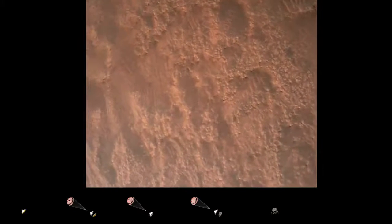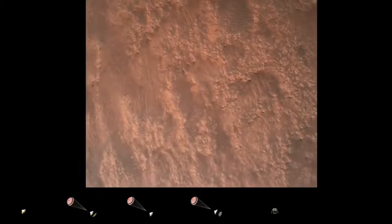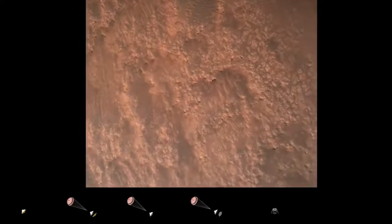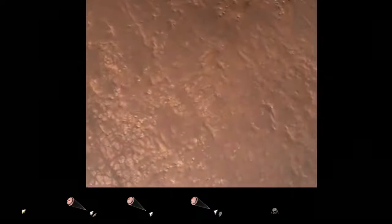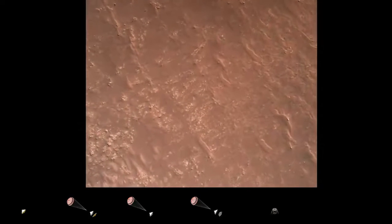Terrain safety, bravo. We have completed our terrain relative navigation. Current speed is about 30 meters per second, altitude of about 300 meters off the surface of Mars.